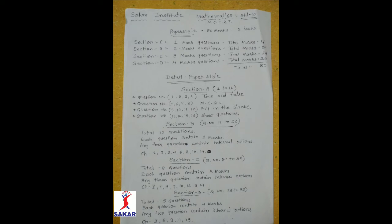In Section D, question numbers 35 to 39. Total 5 questions, each question carries 4 marks. Any 2 questions contain internal options. In this section, questions are from chapters 3, 6, 9, 11 and 13.